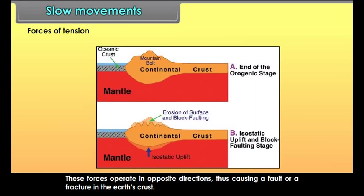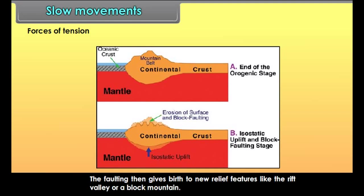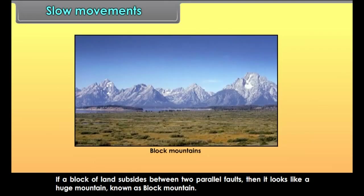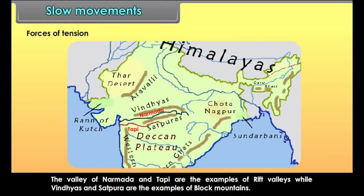Forces of tension operate in opposite directions, causing a fault or a fracture in the earth's crust. The fractured rock strata either slide upward or downward along the fault line. Faulting then gives birth to new relief features like the rift valley or a block mountain. If a block of land subsides between two parallel faults, it forms a rift valley, while an upstanding block forms a block mountain. The valley of Narmada and Tapi are examples of rift valleys, while the Vindhyas and Satpura are examples of block mountains.